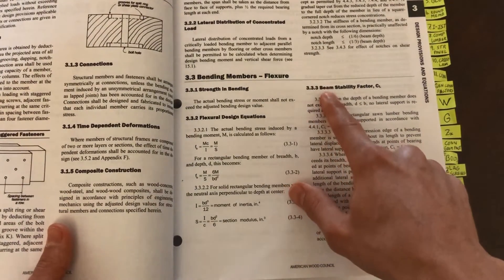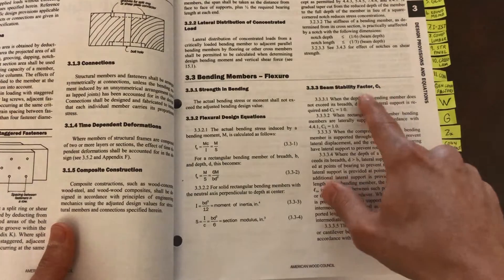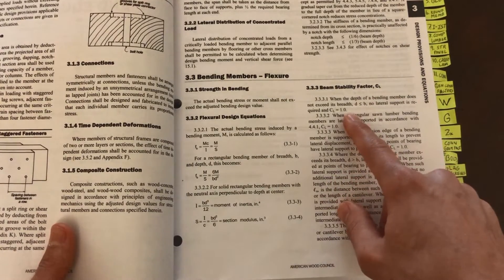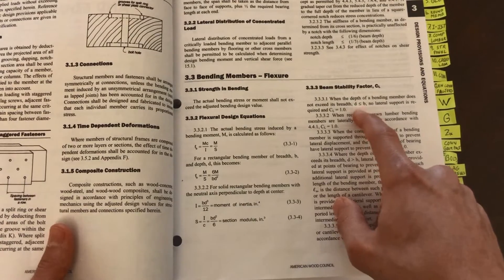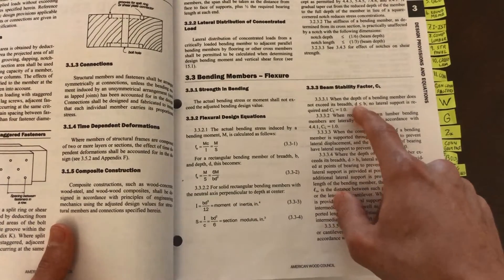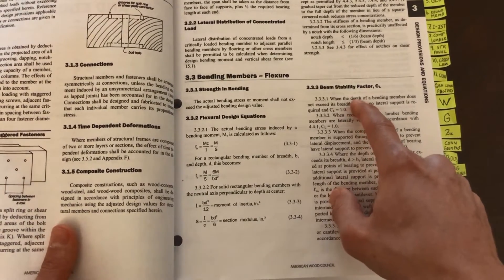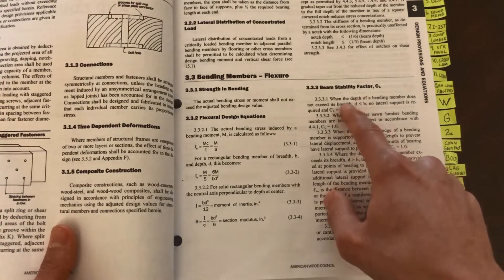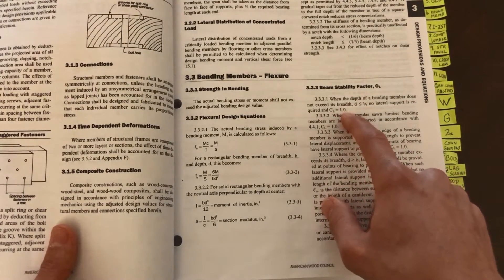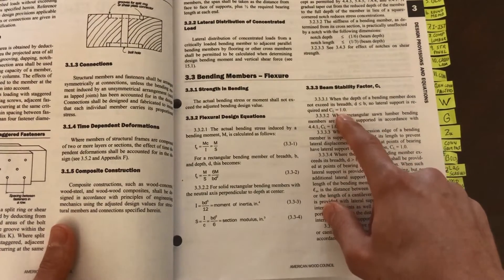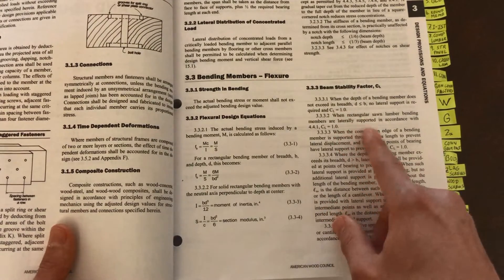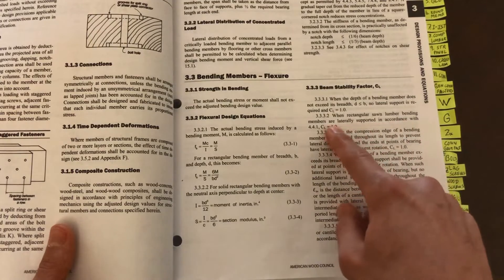I have another handy dandy tab here for design, and this is in chapter 3 where we can calculate C sub L. I open it up and right there I have a big formula for C sub L. But before that, let's take a quick look here at this section 3.3.3.